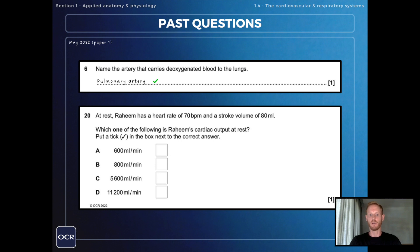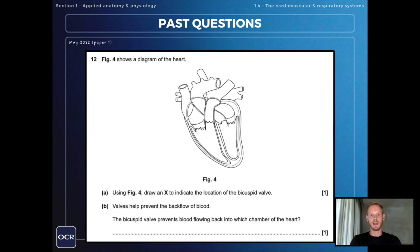At rest Rahim has a heart rate of 70 beats per minute and a stroke volume of 80 milliliters. Which one of the following is Rahim's cardiac output at rest? Now you need to know that cardiac output can be calculated by multiplying heart rate and stroke volume, so 70 beats per minute times 80 milliliters is 5600 milliliters per minute.